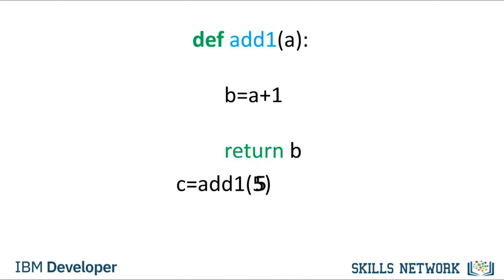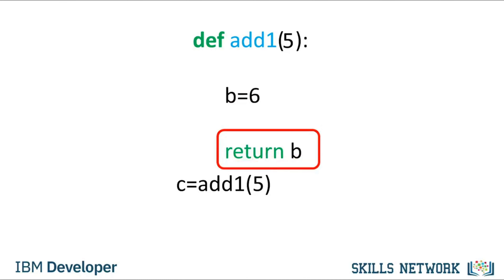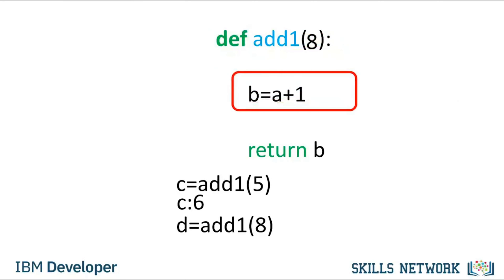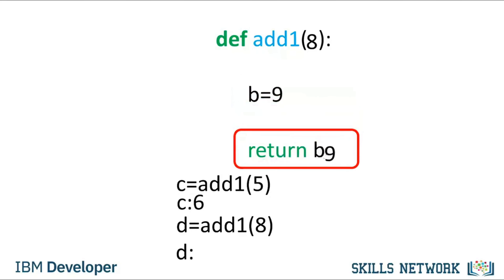If we call the function again, the process starts from scratch. We pass in an 8 — the subsequent operations are performed. Everything that happened at the last call happens again with a different value of a. The function returns a value — in this case 9. It's customary to document the function on the first few lines, surrounded in triple quotes, to tell anyone who uses the function what it does. You can use the help command on the function to display the documentation.